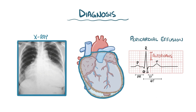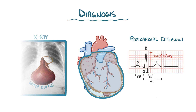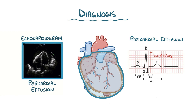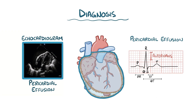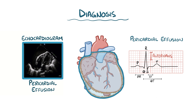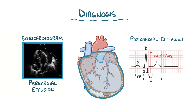On an X-ray of a heart with a large pericardial effusion, you can see a silhouette that pools to the bottom of the heart, giving a classic water bottle sign. On an echocardiogram, a pericardial effusion makes the heart look like it's dancing within the pericardium, whereas constrictive pericarditis shows the stiff serous pericardium restricting the heart's movement.